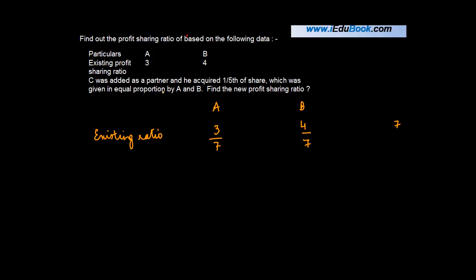C was added as a partner and he acquired 1/5 of the share, which was given in equal proportion by A and B. So C became a new partner.